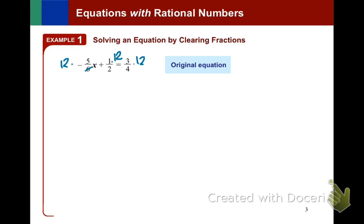Okay, then I can cross-cancel. 6 goes into itself one time and into 12 two times. And 2 times a negative 5x is negative 10x. So if I cross-cancel here, it's 1 and 6, so plus 6. 1 and 3 is equal to 9.